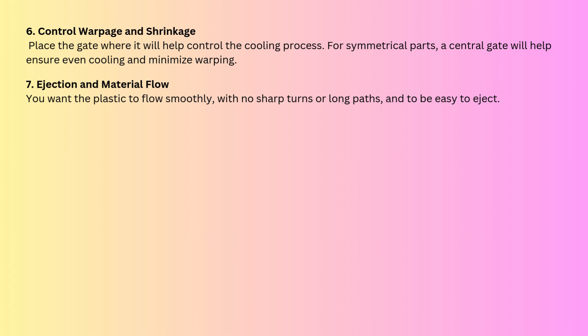The next point is ejection and material flow. Ejection is the final step, so make sure the gate won't interfere with part ejection from the mold. You want the plastic to flow smoothly with no sharp turns and no long paths, and the part should be easily ejected.